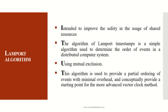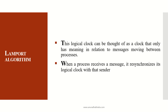This algorithm is used to provide a partial ordering of events with minimum overhead, and conceptually provides a starting point for the more advanced vector clock method. It works on clock synchronization — at the time a process requests a particular resource, the timestamp with the clock synchronization is registered. This logical clock can be thought of as a clock that only has meaning in relation to the messages moving between processes. Each process communicates with other processes on the basis of the timestamp of the logical clock that it is using.